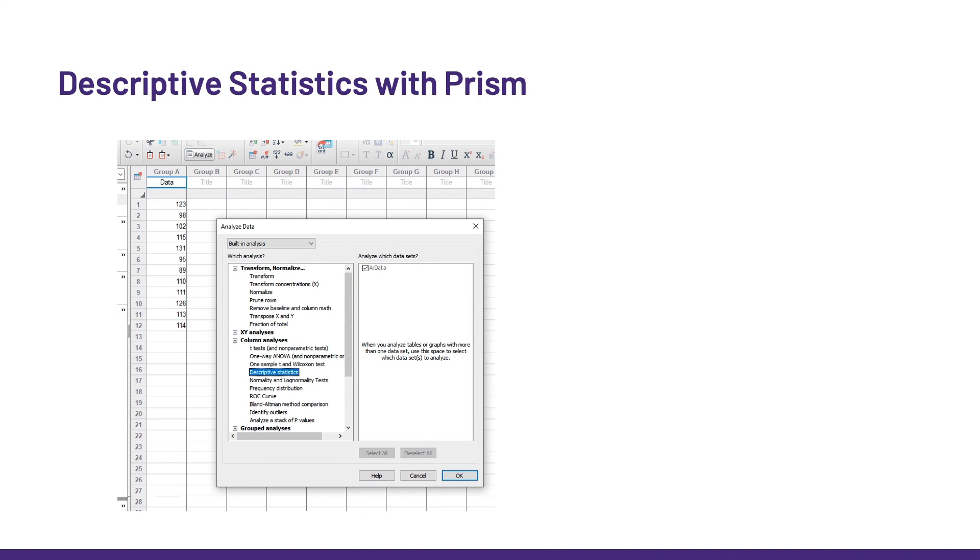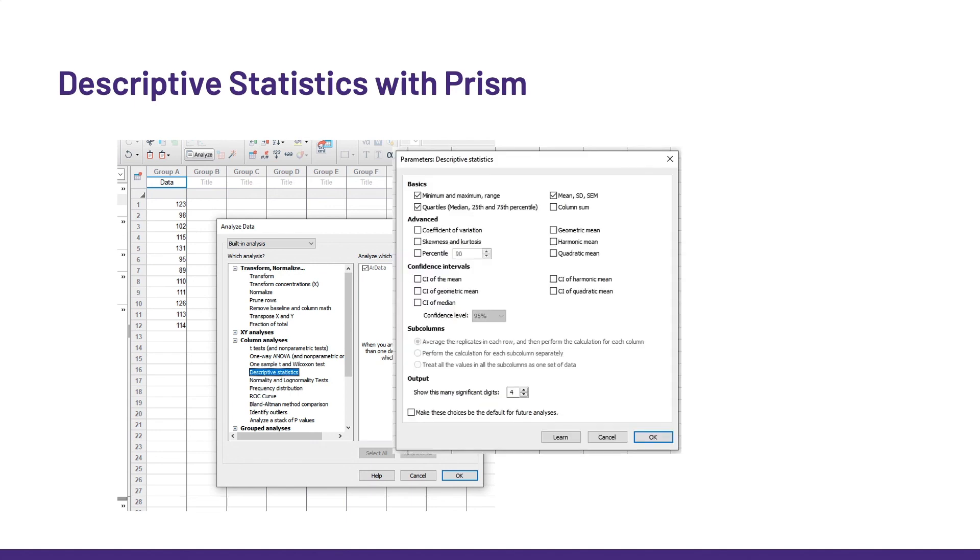Finally, as always, it is really easy to produce descriptive statistics with Prism. All we have to do is pick descriptive analysis in the analyze menu, choose the descriptives we want, and voila!